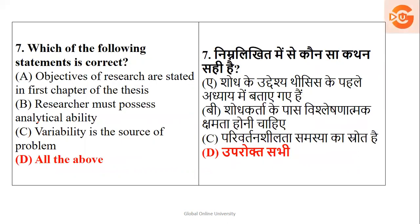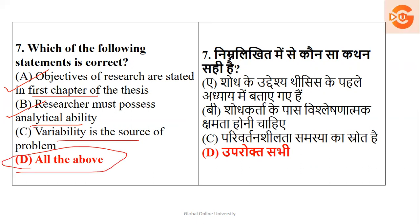Question 7: Which of the following statements is correct? Objectives of research are stated in the first chapter — yes. Research must possess analytical ability — yes. Variability is the source of a problem — yes. Since all statements are correct, option D — all of the above — is the right answer.